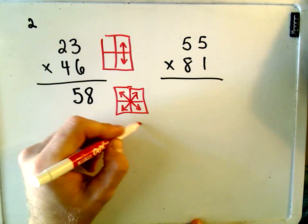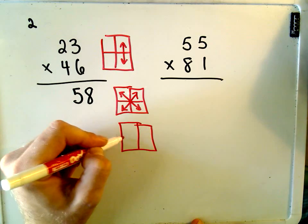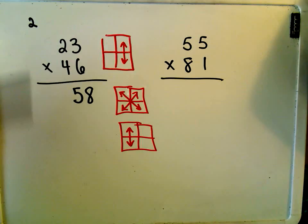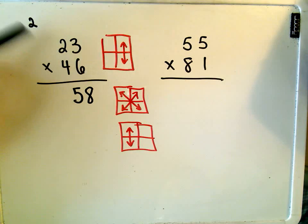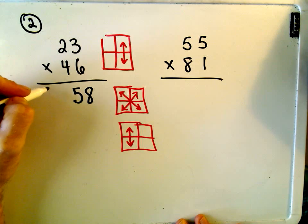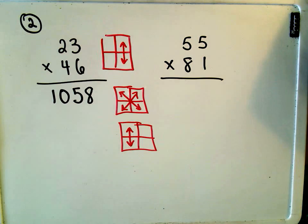And then the last step I do is I just multiply the two numbers on the left together. So if you multiply 2 times 4, you get 8. And then we just add the number again that we carried. So 8 plus 2 would give us 10, and that's our number, 1058.